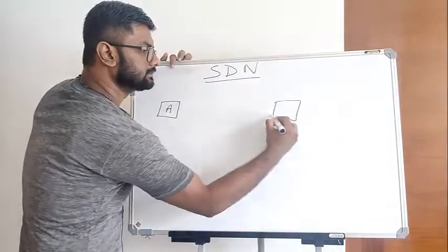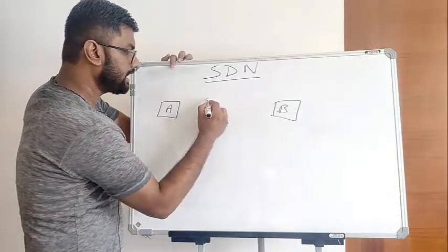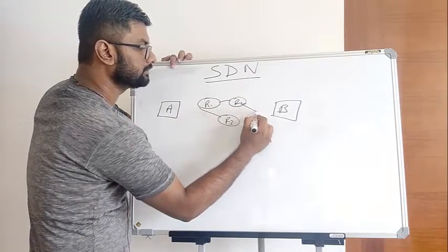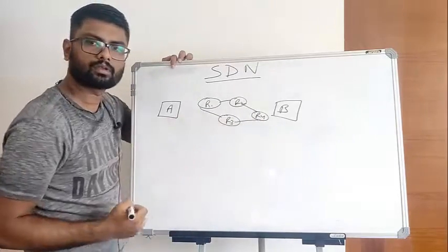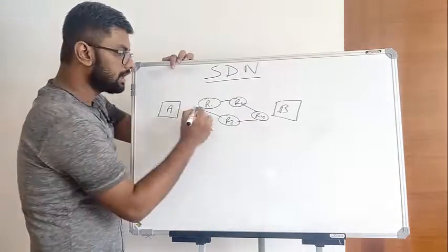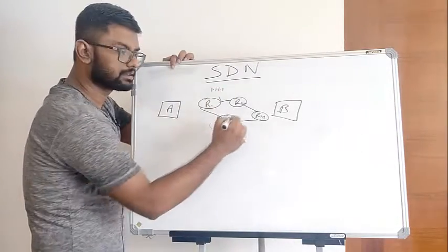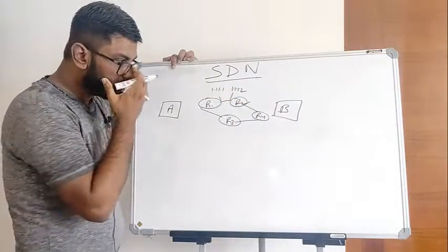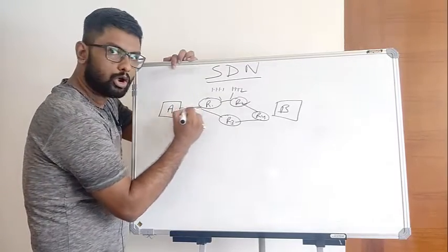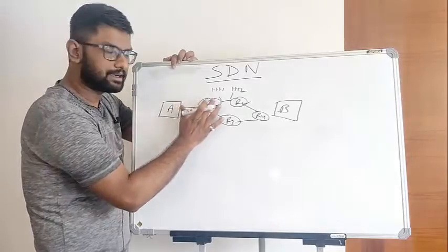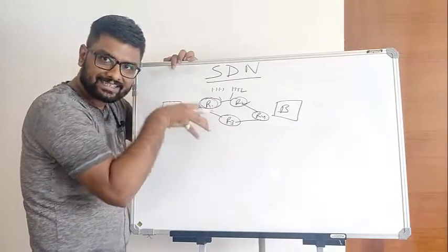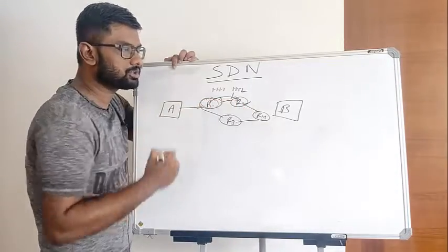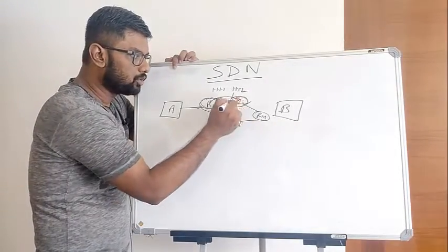We have routers: router one, router two, router three, router four, each with their own IP addresses. Now if computer A sends data to router one, the router uses its routing protocol details or routing table, and based on that it forwards the information to router two. Router two has its own forwarding plane.